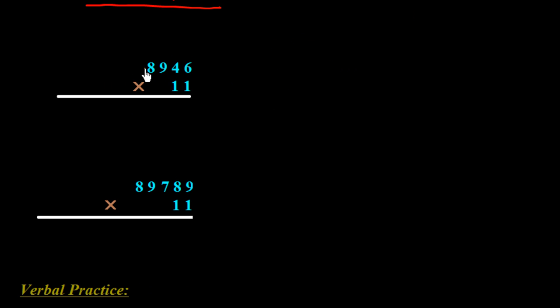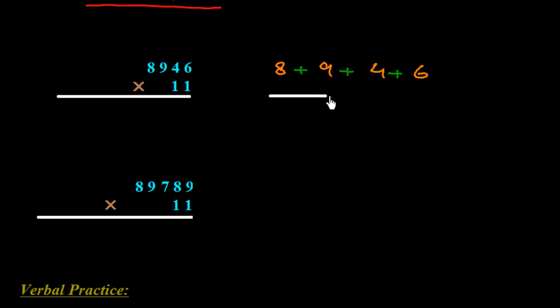Now we have a 4-digit number. I write down 8946, putting positive signs between them with this technique, and drawing a line under this.